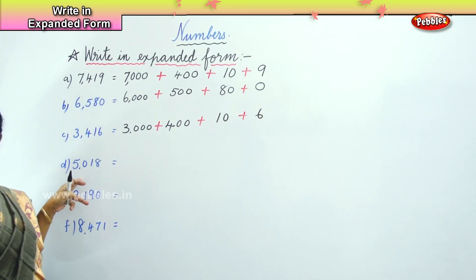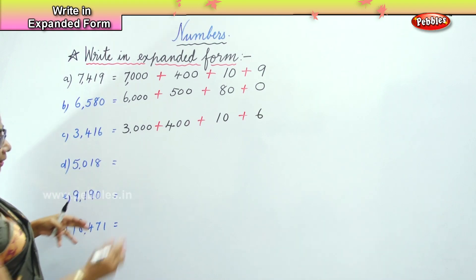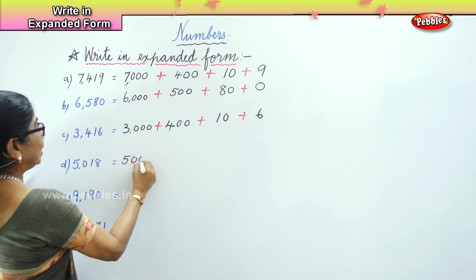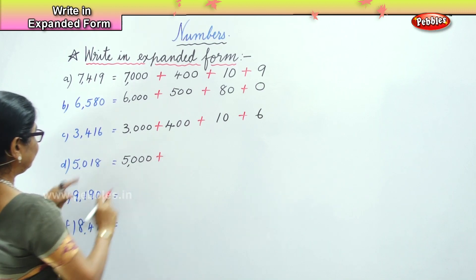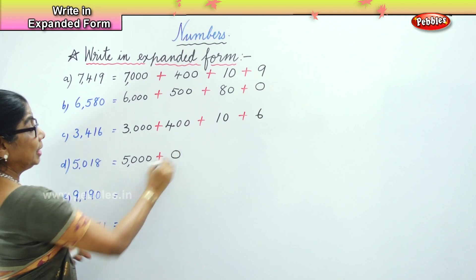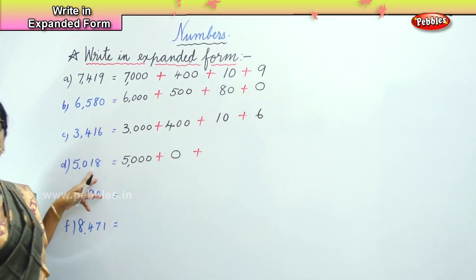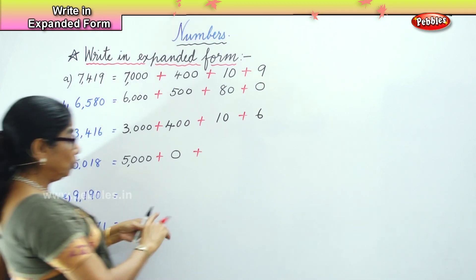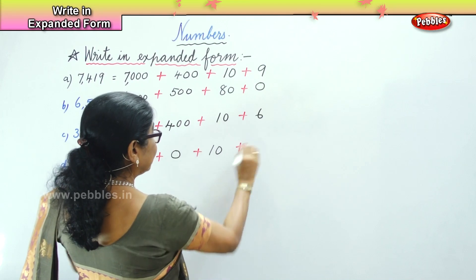Next we have 5,0,1,8. So what is the first number? Five thousand, plus zero hundred — zero in the hundredth place — plus ten, plus eight.